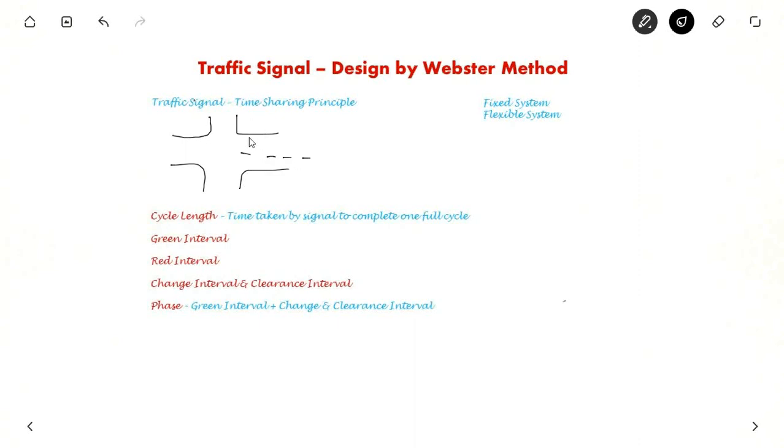So traffic signal works on time sharing principle. Suppose this is the stop line and during red interval the vehicles queue up one behind the another. When it is green, this side goes first and this side becomes red and next this phase happens. So one cycle is completed.